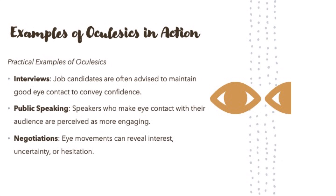In negotiation, subtle changes in eye behavior — like looking away or breaking eye contact — can reveal uncertainty or hesitation, which might affect how the other party interprets your confidence in your position. A good cross-cultural example is a business meeting between Japanese and American professionals. While Americans might expect eye contact as a sign of engagement, Japanese participants may avoid it to show respect, especially towards senior figures.